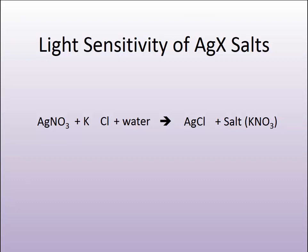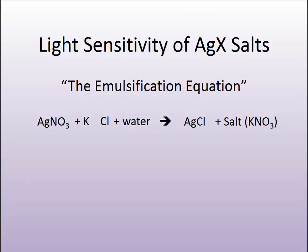We begin our investigation of the light sensitivity of silver salts by first learning how silver halides are formed. As shown on this slide, we see what is referred to as the emulsification equation. A little bit later on, I will describe in more detail why this equation is called an emulsification equation. For right now, let's focus on the formation of the very light-sensitive silver halide salts used in traditional film and paper-based photography. This is a chemical equation showing how we combine two soluble salts in water to form a very insoluble silver halide salt.